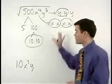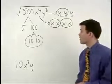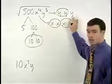Notice that everything that comes out multiplies together. What we're left with on the inside are the 5 and the y that don't pair up.